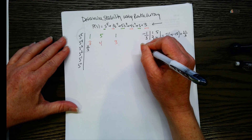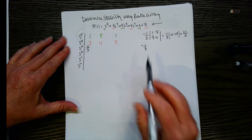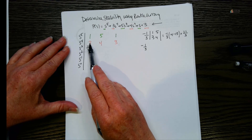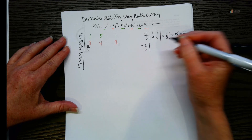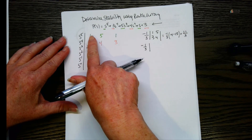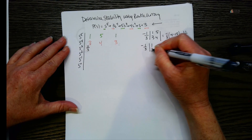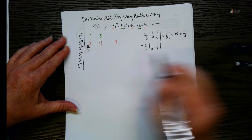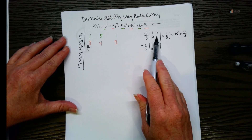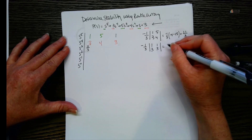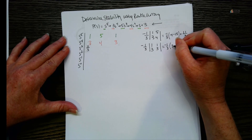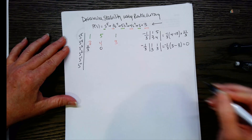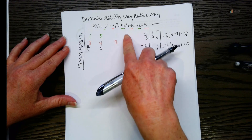For the next element in this row, the coefficient is again negative one-third. We keep the first column the same — one and three — and move to the next column using one and three. We get negative one-third times the quantity one times three minus one times three, which is negative one-third times zero, giving us zero. That's all we can get for this row.